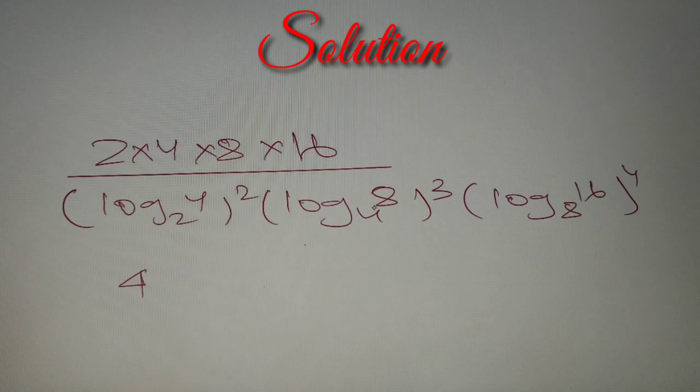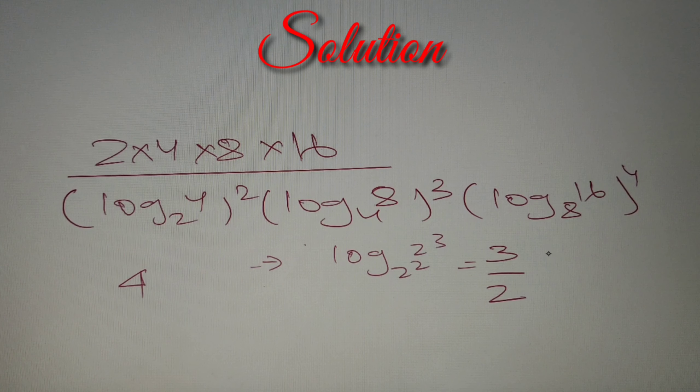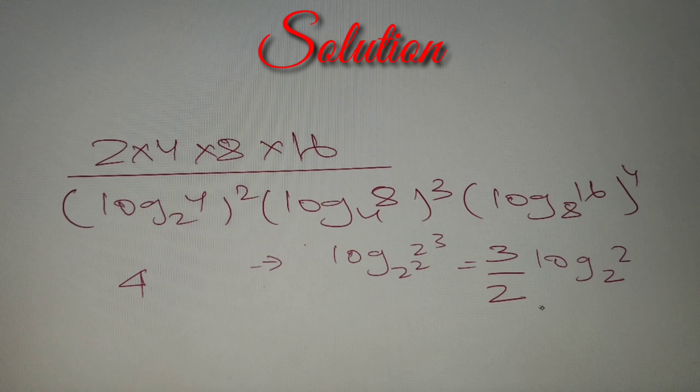Now let's move on to our second bracket. We have log 8 base 4 whole cube. Log 8 base 4 can be written as log 2³ base 2². If we have a power in the number, it comes in the product, and if in the base, it comes in the denominator. So we have 3/2 log of 2 base 2, which equals 1. So we get 3/2 raised to cube, which is 27/8.